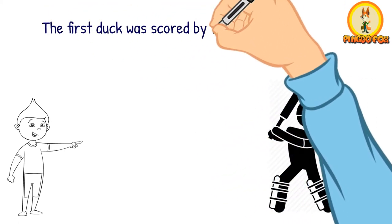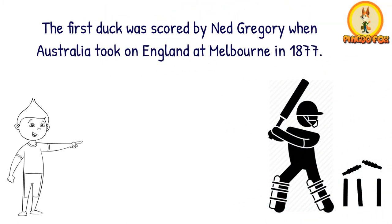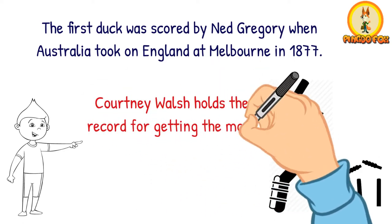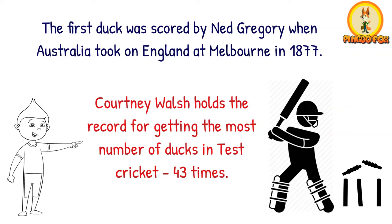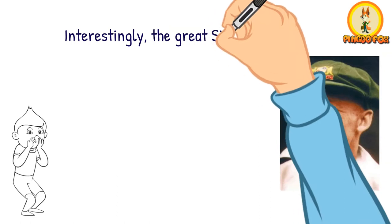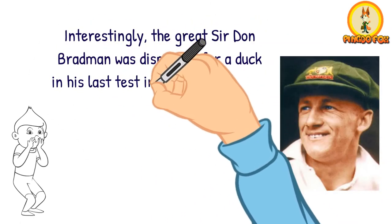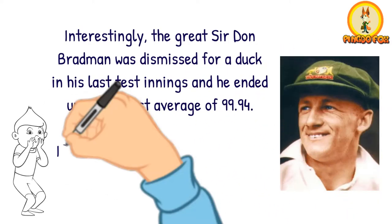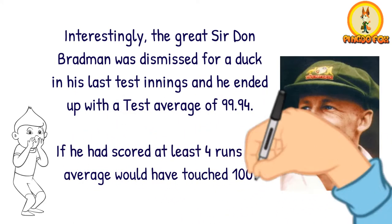The first duck was scored by Ned Gregory when Australia took on England at Melbourne in 1877. Courtney Walsh holds the record for getting the most number of ducks in test cricket, 43 times. Interestingly, the great Sir Don Bradman was dismissed for a duck in his last test innings, and he ended up with a test average of 99.94. If he had scored at least 4 runs, his average would have touched 100.